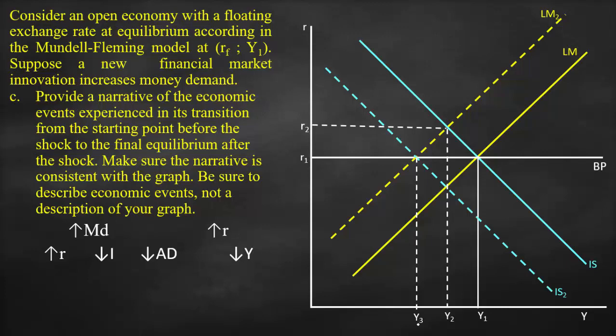The increasing interest rate will cause investment to decrease, consequently lower aggregate demand, which would then lower output. At a higher interest rate, it will attract international funds.